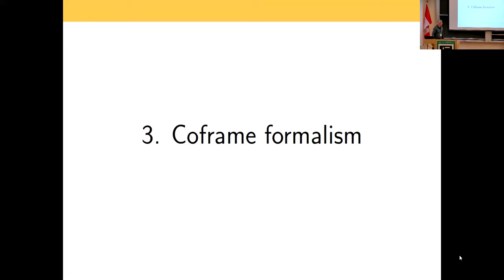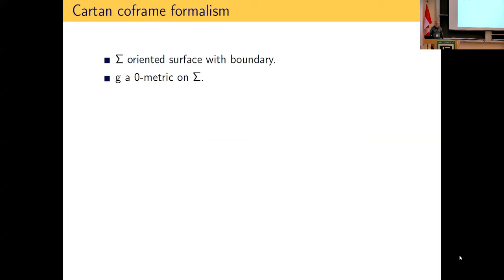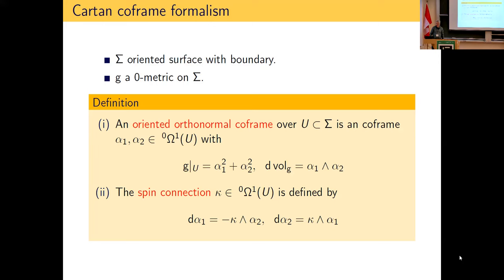When doing calculations with hyperbolic metrics, the coframe formalism is very convenient. I must say that before working on this project I had learned the Cartan coframe formalism as a physicist and as a mathematician had somewhat forgotten how useful it is. So we use the Cartan coframe formalism. For a surface with boundary with a zero metric, the coframe is a local orthonormal frame for the zero tangent bundle — equivalently, a coframe for the cotangent bundle.